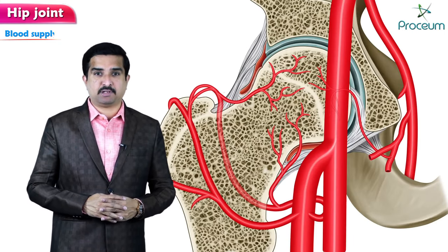Now let us concentrate on the blood supply of the hip joint. Two sets of arteries contribute to the vascularization of the joint capsule. The major contributing arteries are the medial and lateral circumflex arteries, which arise from the deep branch of the femoral artery — so the femoral artery branches have the major contribution. The minor contribution comes singularly from the artery of the head of the femur.